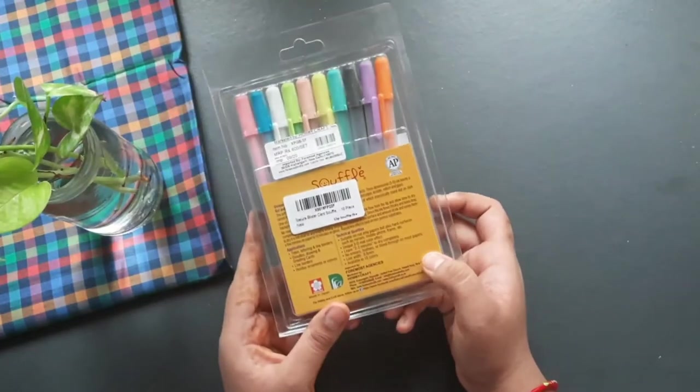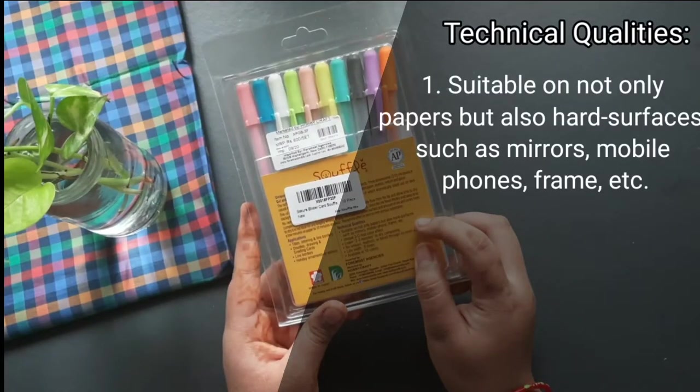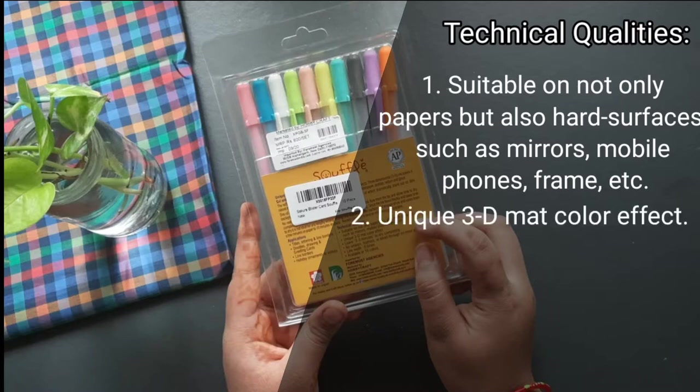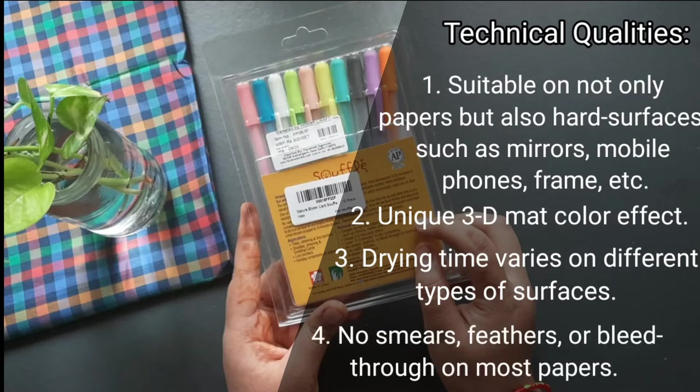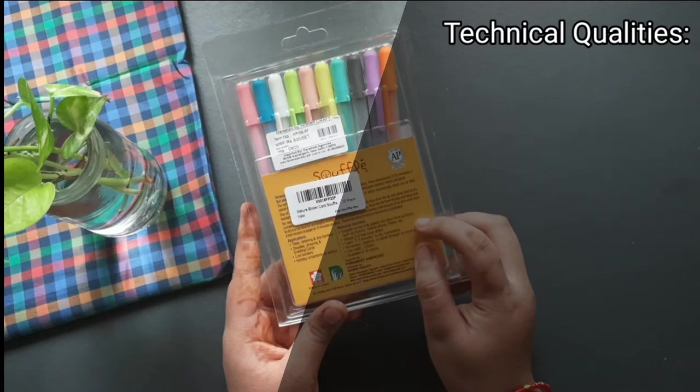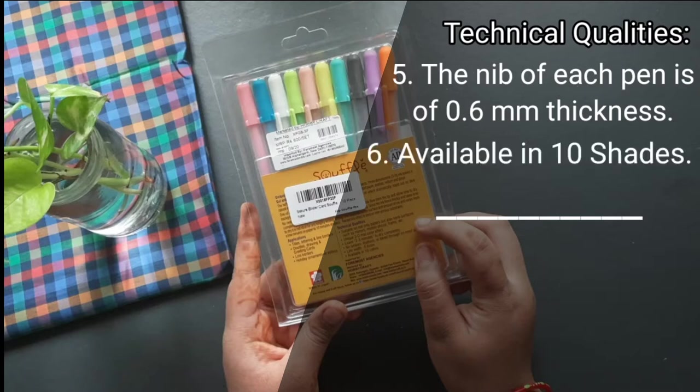And talking about its technical qualities, here are as follows. Number one: it's suitable on not only paper but also on hard surfaces such as mirror, mobile phones, frames, etc. Number two: unique 3D matte color effect. Number three: its drying time can vary on different types of surfaces. For example, on paper it can take two to five minutes. Number four: there will be no smears, feathers, or bleed through on most of the papers. Number five: the nib of each pen is of 0.6mm thickness. And at last number six: its availability is of 10 shades.